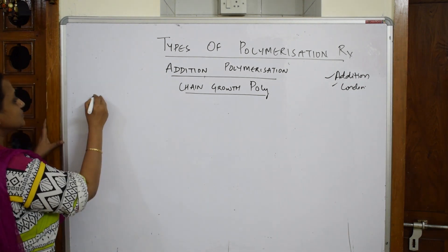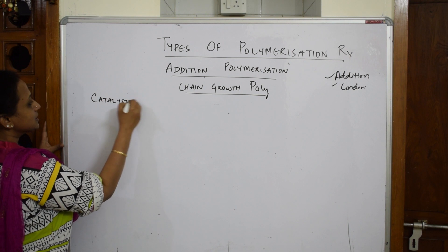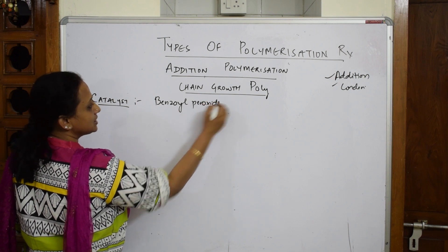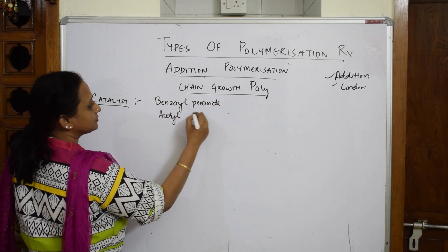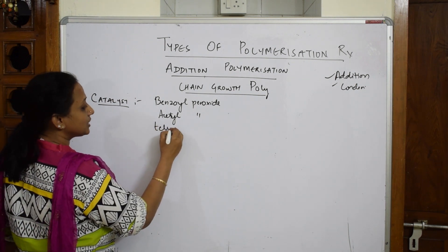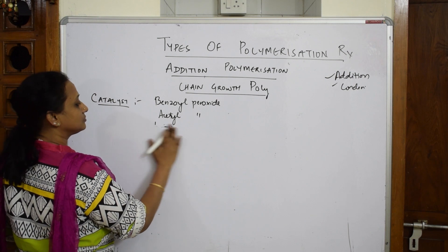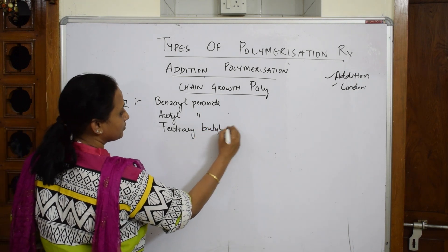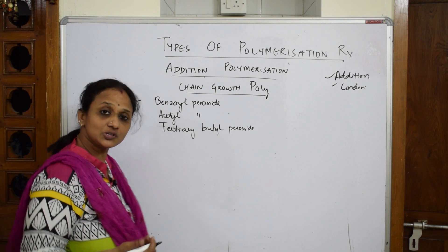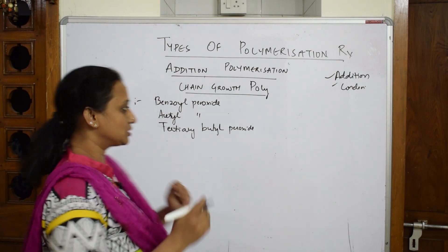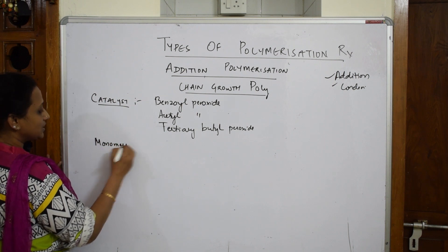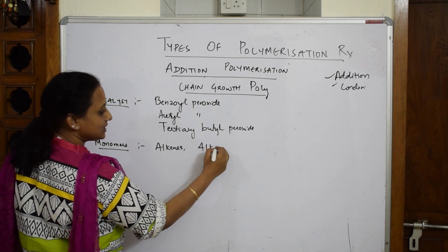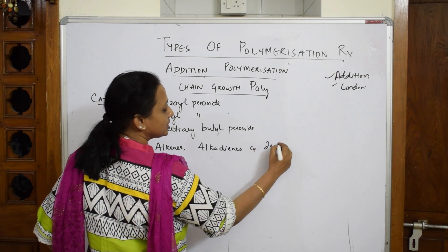For addition polymerization, you need a catalyst and a monomer. The catalysts we are going to use can be benzoyl peroxide, acetyl peroxide, or tertiary butyl peroxide. The monomers should be either alkenes or alkadienes and their derivatives.